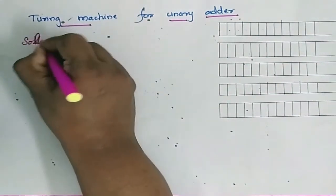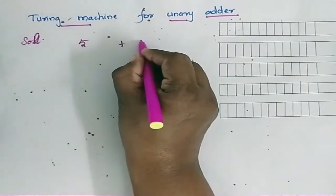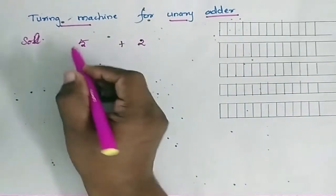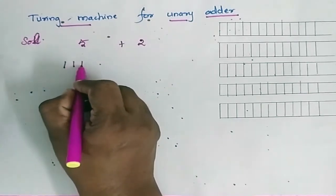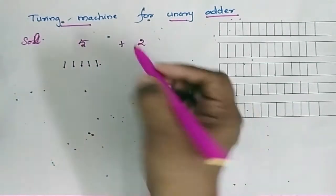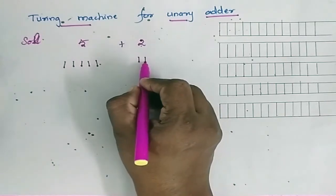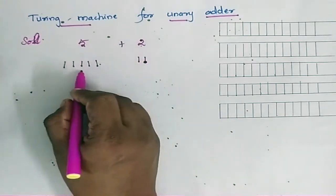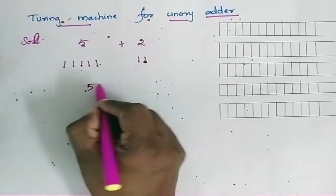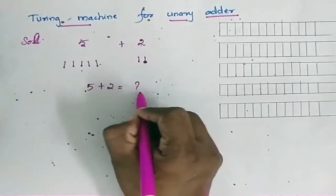We will consider two numbers: 5 plus 2. The unary equivalent of 5 is 1, 2, 3, 4, 5. The unary equivalent of 2 is 1, 2. Now we have to add these two and find the result. 5 plus 2 is 7.